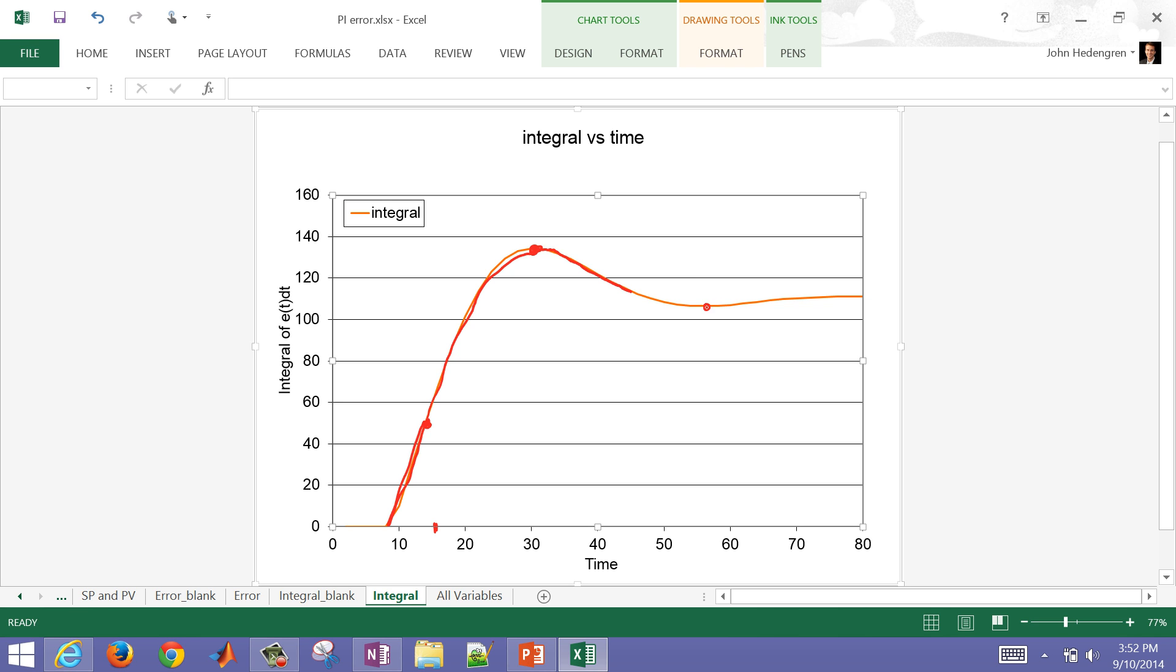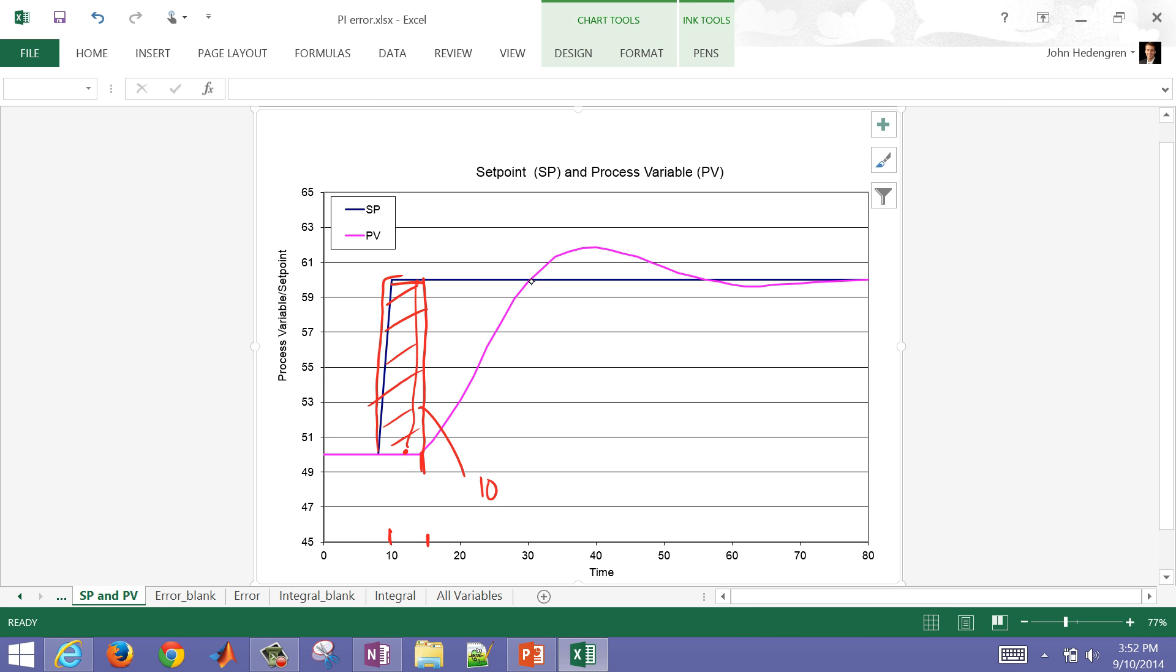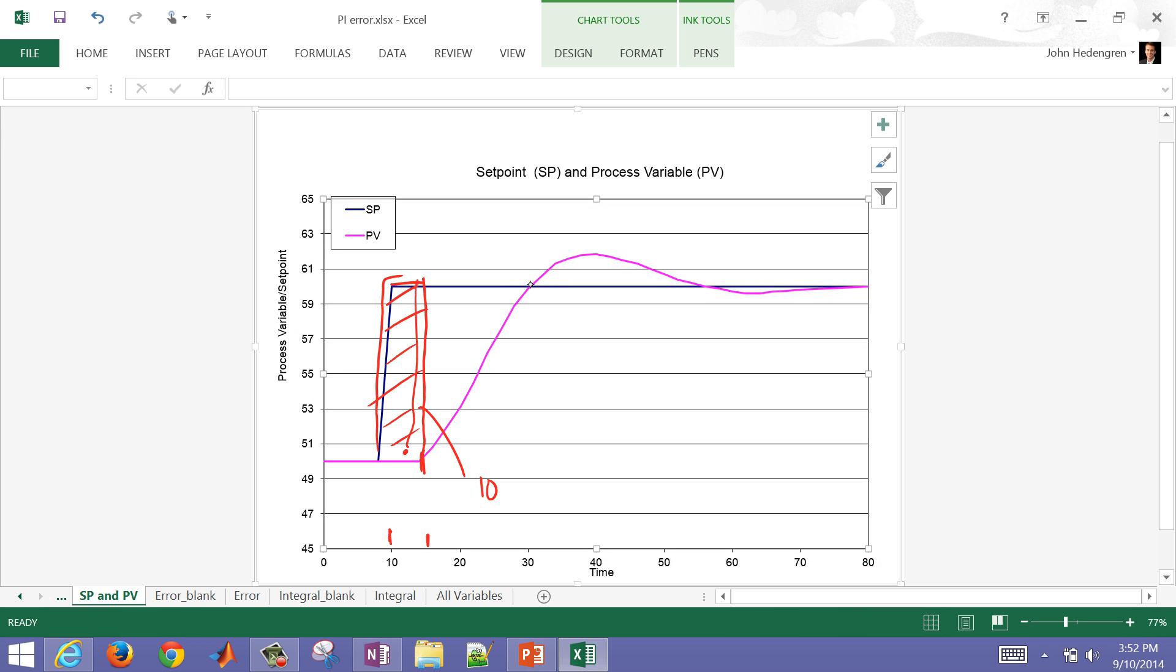Between this and this point, that is where the error is negative. And then this is the error is going to be positive, and then this is error is slightly positive as well. So let's just go back and check that out. That was this area right here between this point and this point. The error is negative, and so the integral term decreased in value.